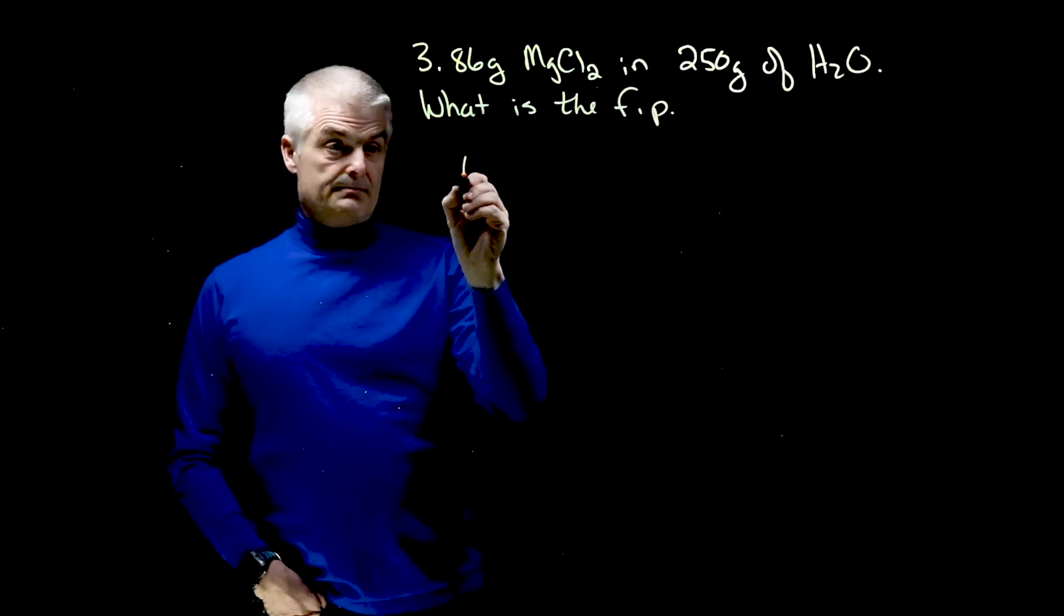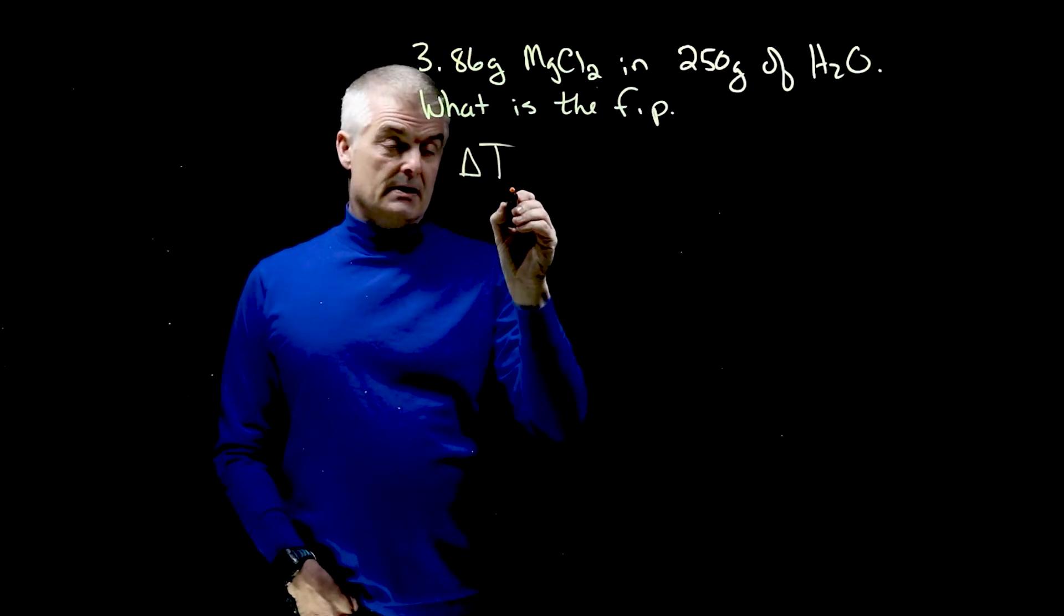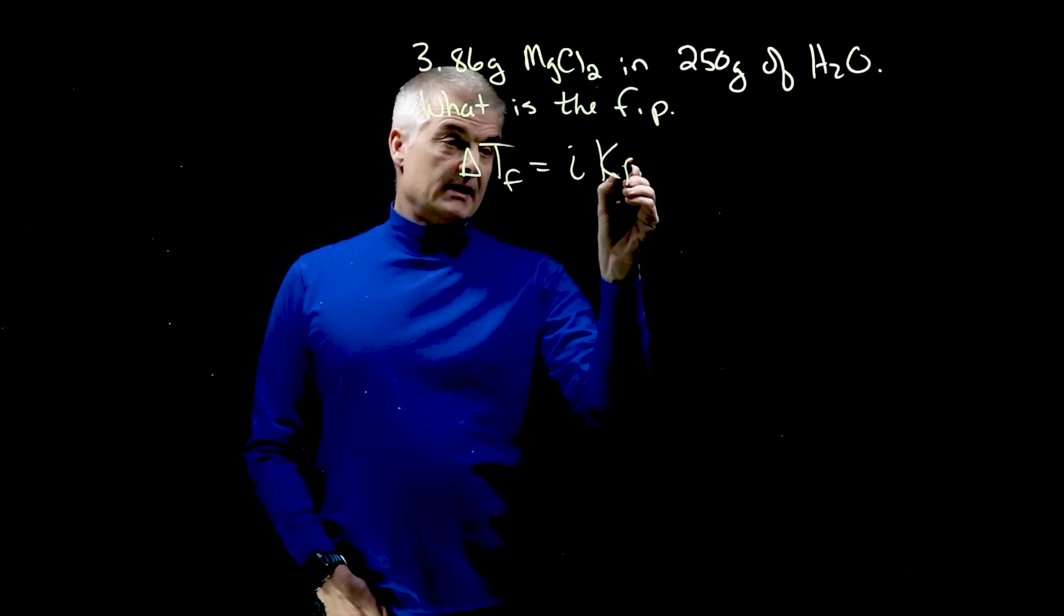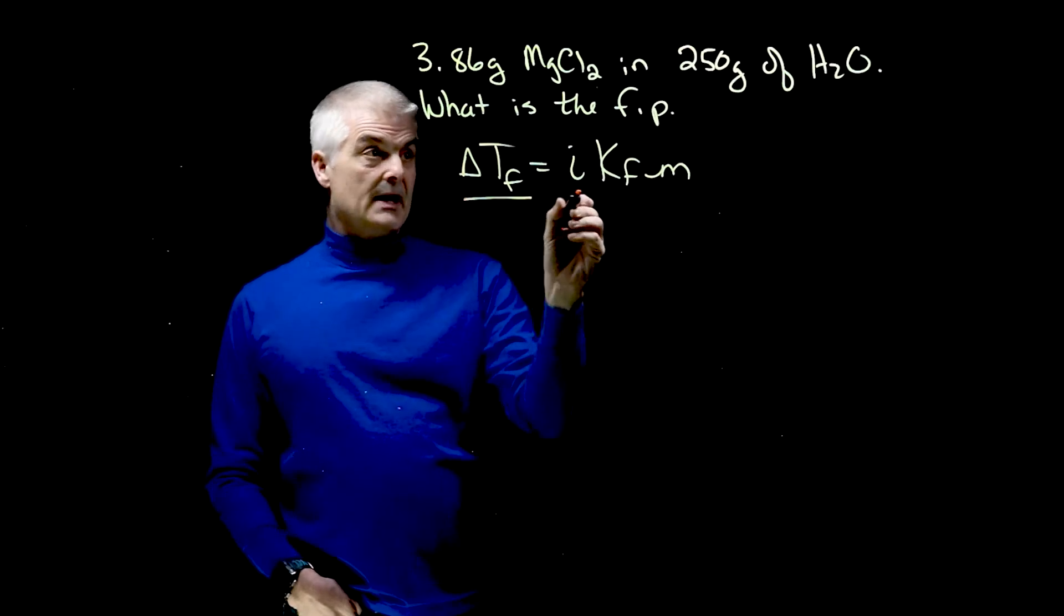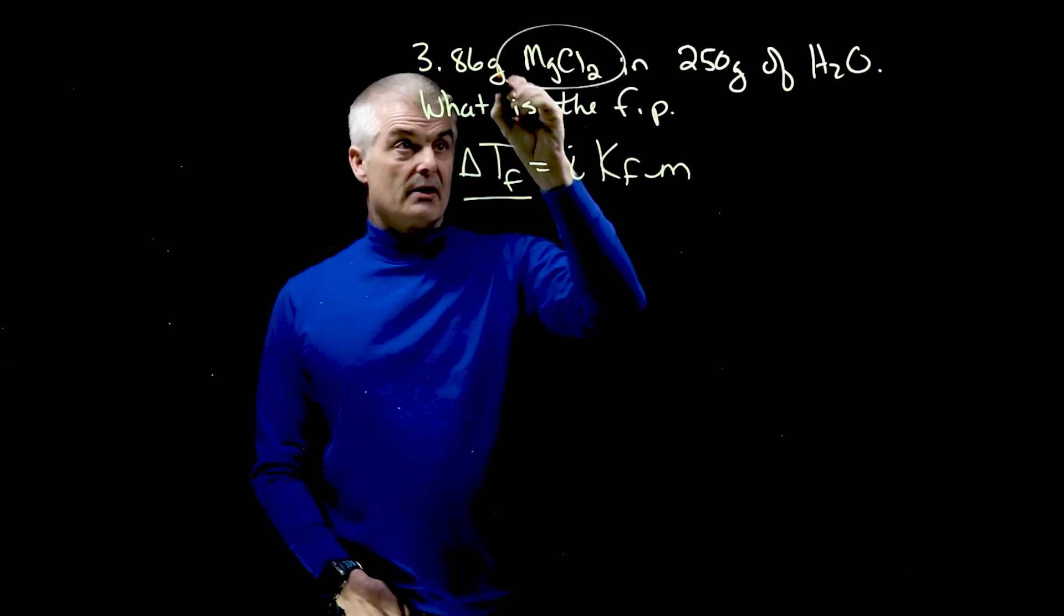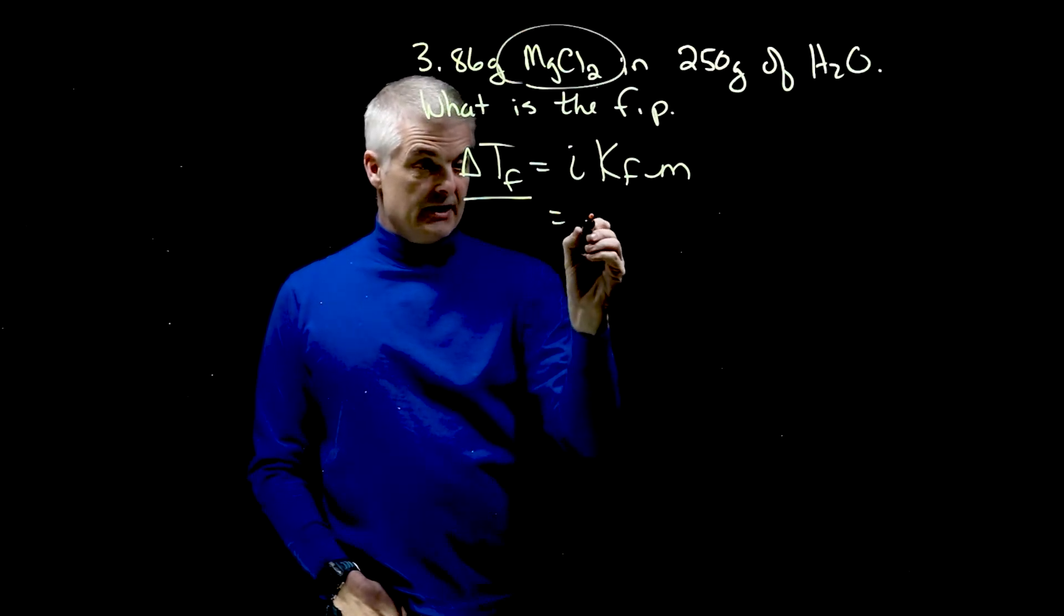What's the equation? Delta T sub F equals I K sub F times M. So I'm trying to solve for this. I, we did this a bit ago, mag chloride breaks into three particles, so that's going to equal 3.